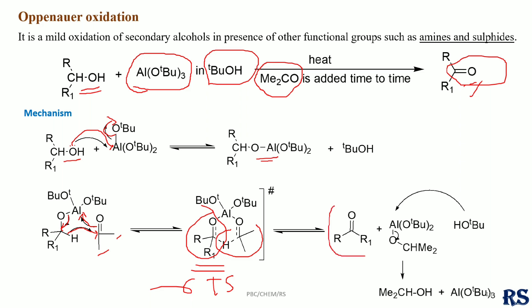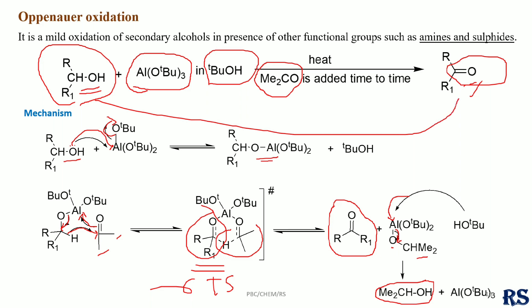We add acetone gradually. This is tert-butanol. We have to attack the isopropanol group. So, we perform alcohol oxidation.